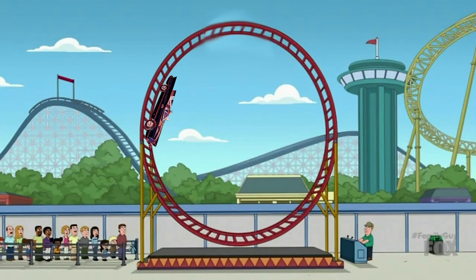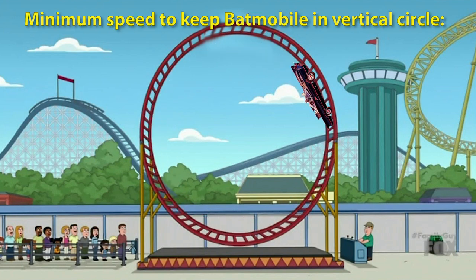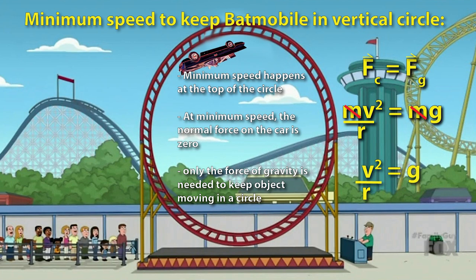When a roller coaster car moves in a vertical circle, the forces that make up the centripetal force are the normal force and the force of gravity. But if you're looking for the minimum speed needed to keep that object in a circle, then the normal force is zero at the top of the track at that minimum speed, the very slowest you can go without falling off the track.